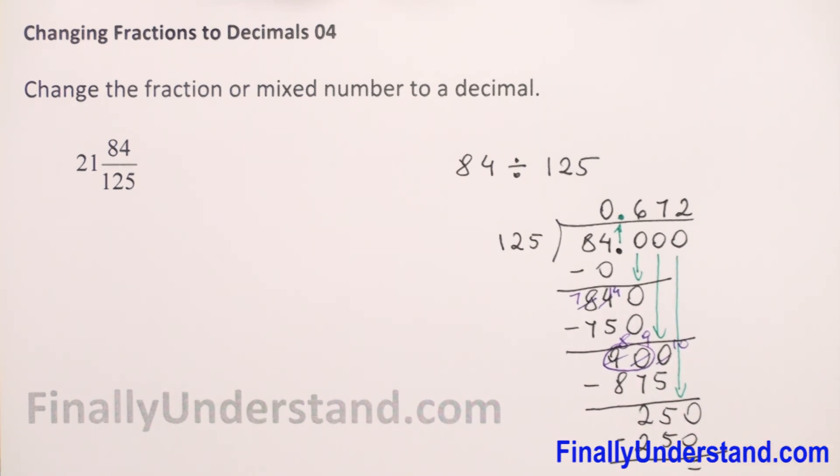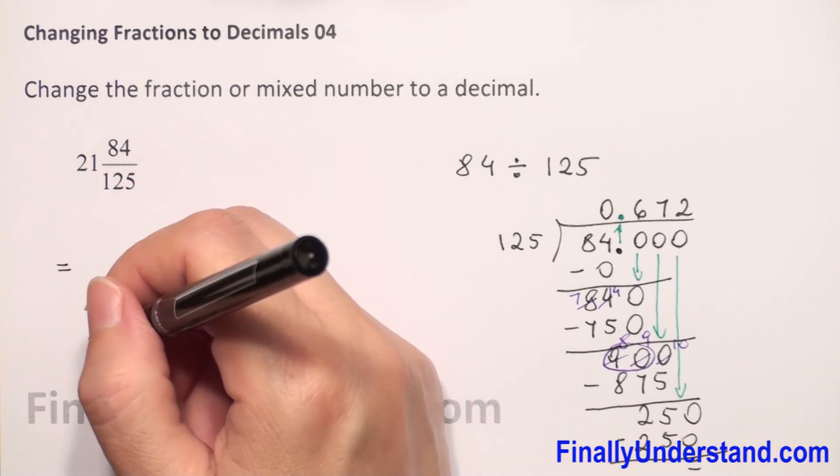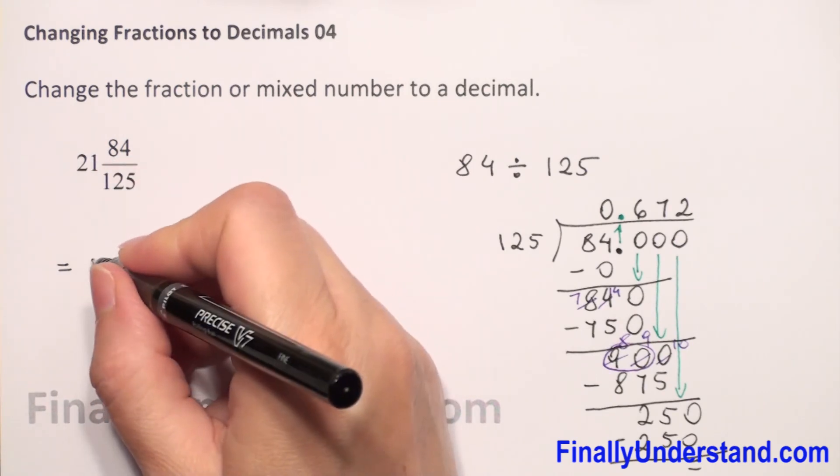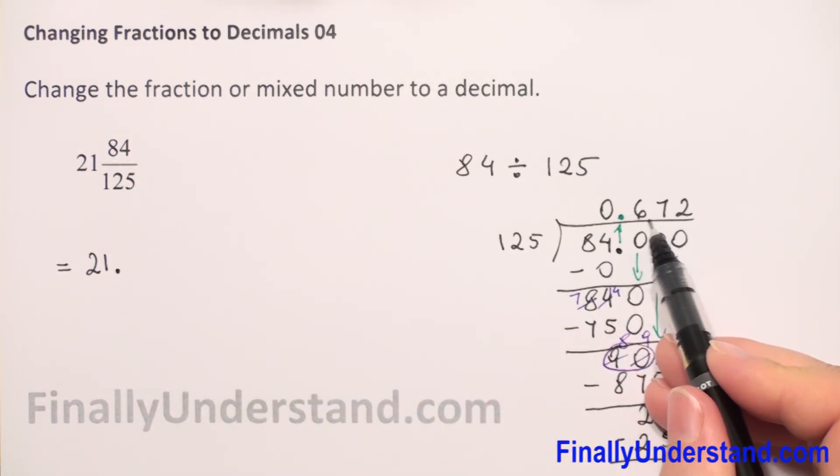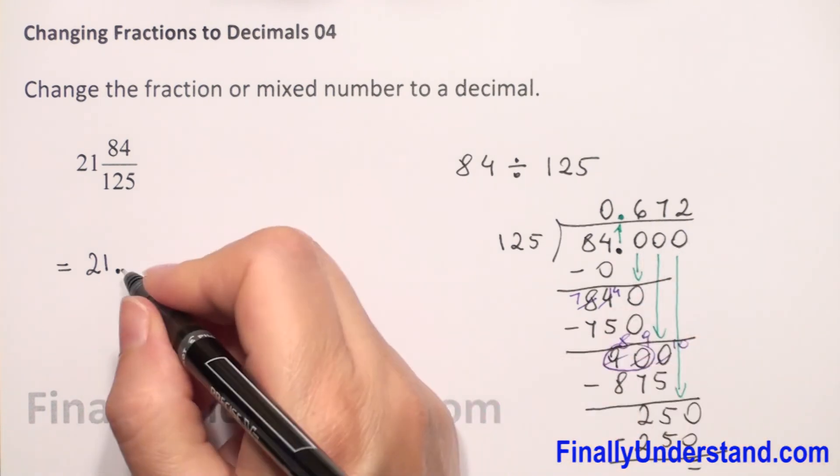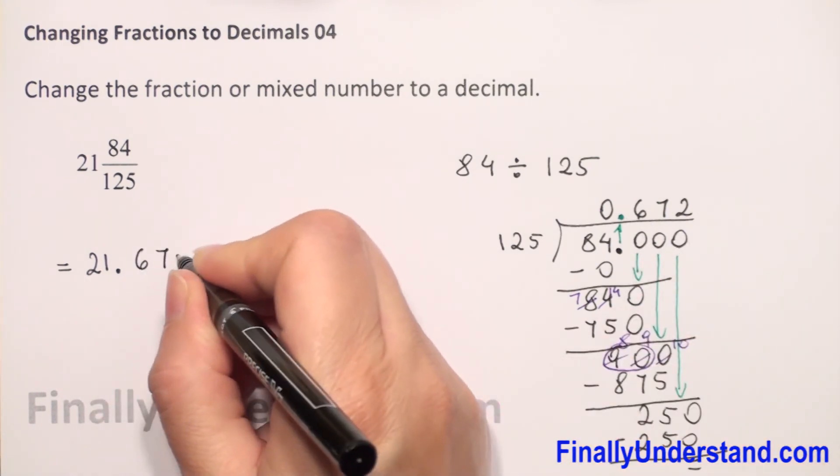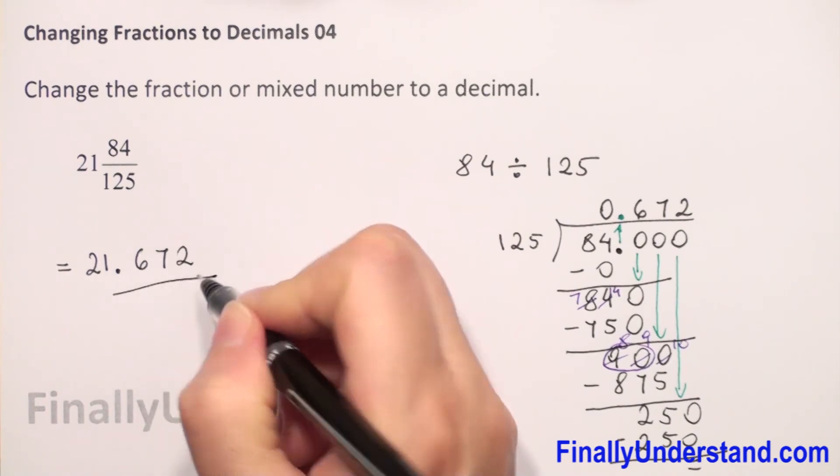We finish the long division and we can rewrite our mixed number as a decimal number. The whole number, like I said, we copy, then the decimal point, and whatever we got on top after the decimal point: six, seven, two. This is my solution.